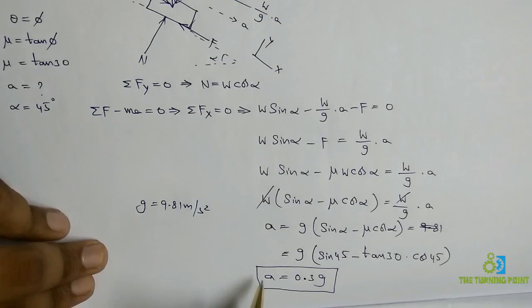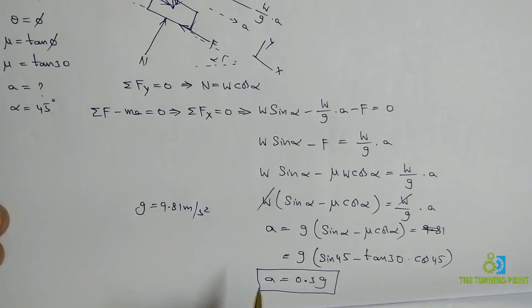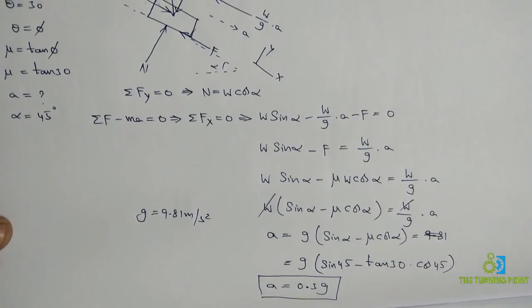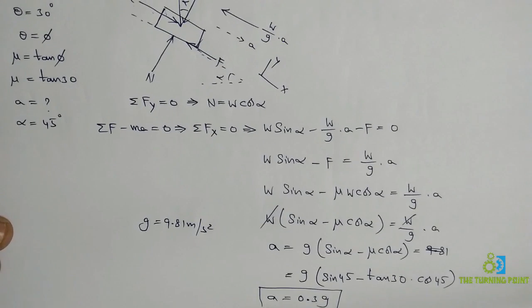So the acceleration is 0.3g, or substituting g equals 9.81 m/s² you can simplify it further. Thank you for watching — hope you liked this video. For more videos, please subscribe to my channel.